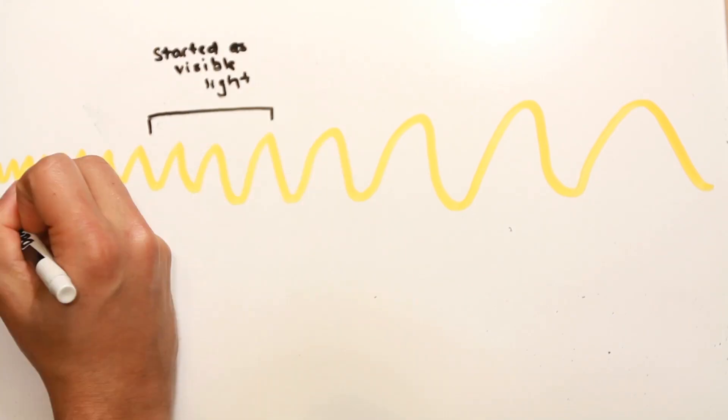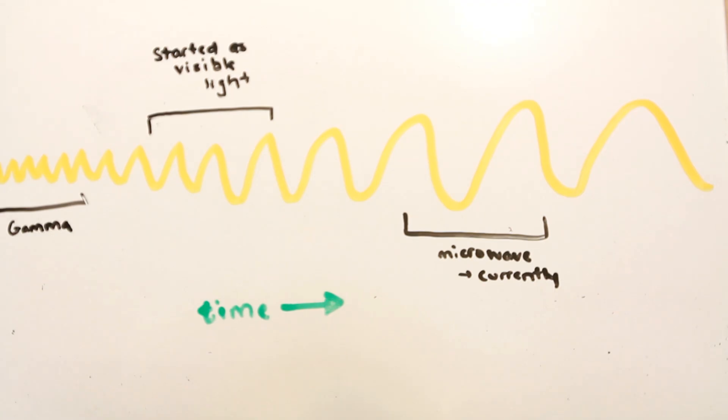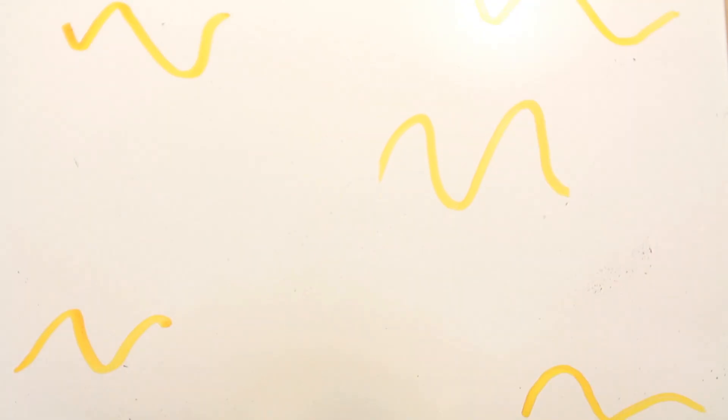But over the past 10 billion years or so, they got stretched out enormously due to the universe expanding. These photons have been propagating through the universe ever since the Big Bang, as a very cold and diffuse photon gas in the microwave band.